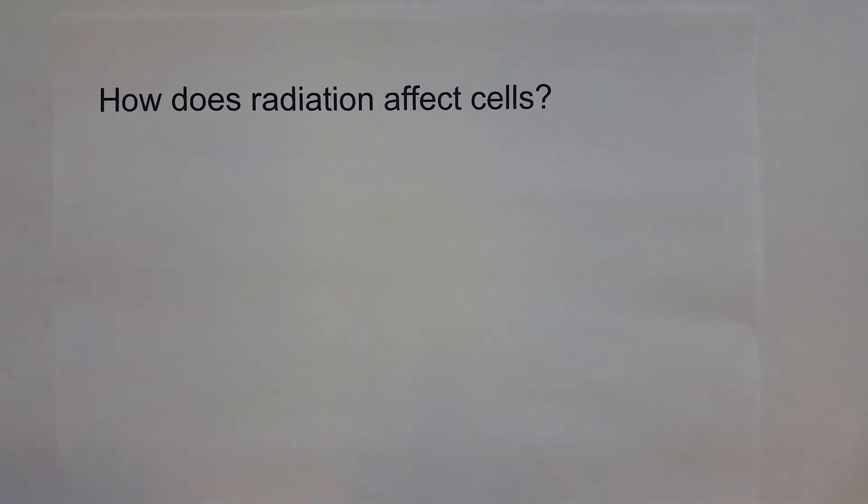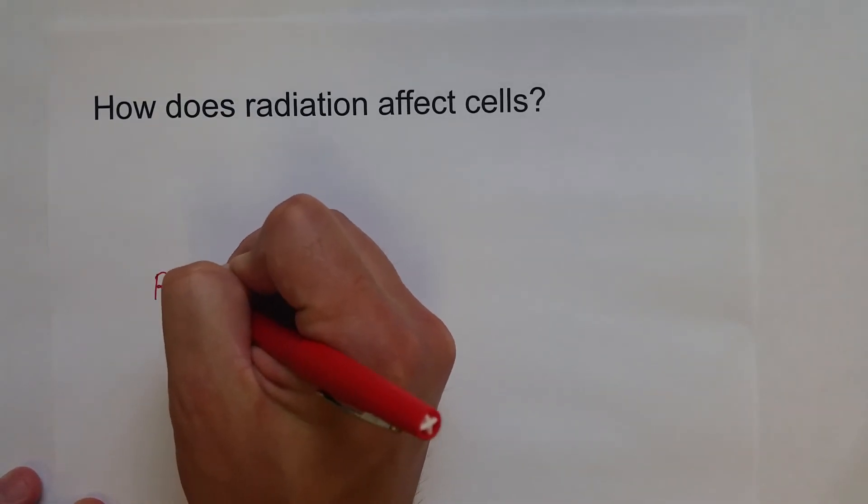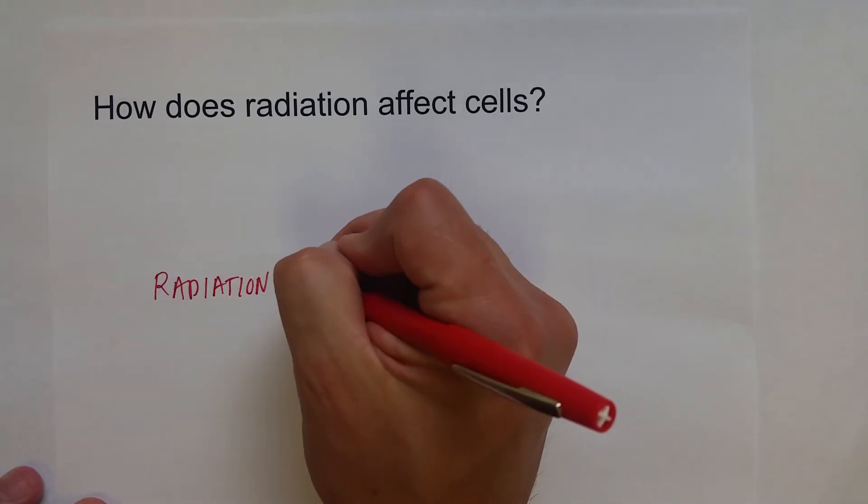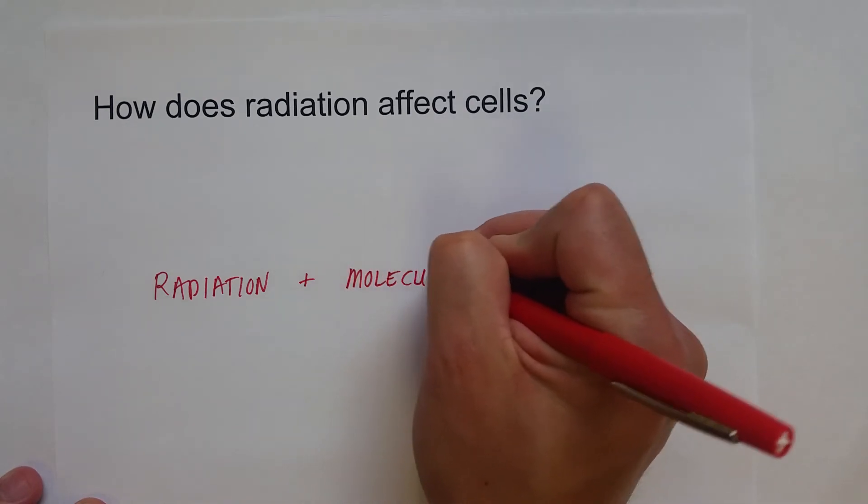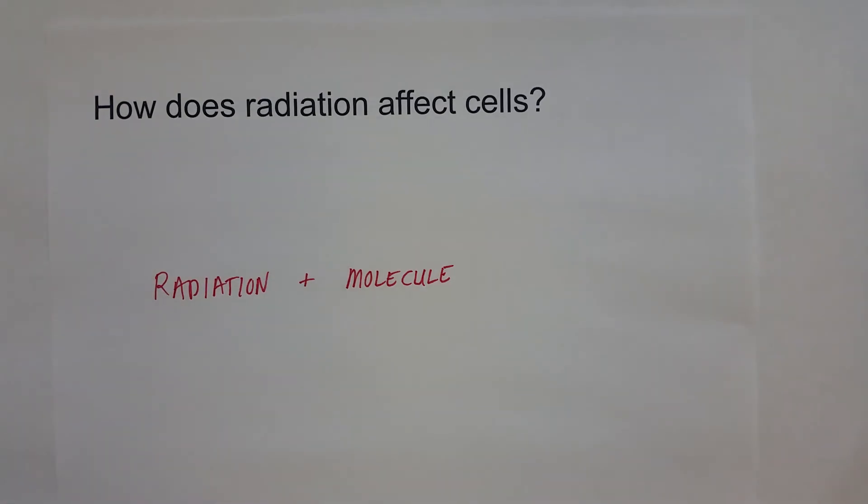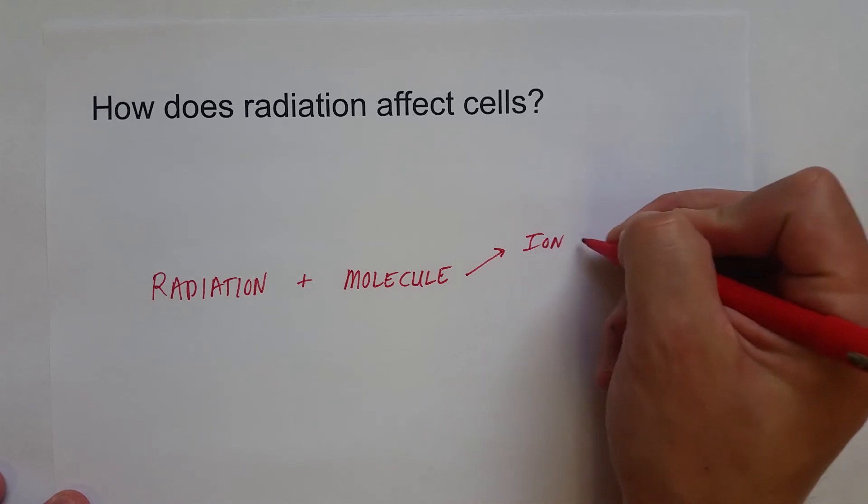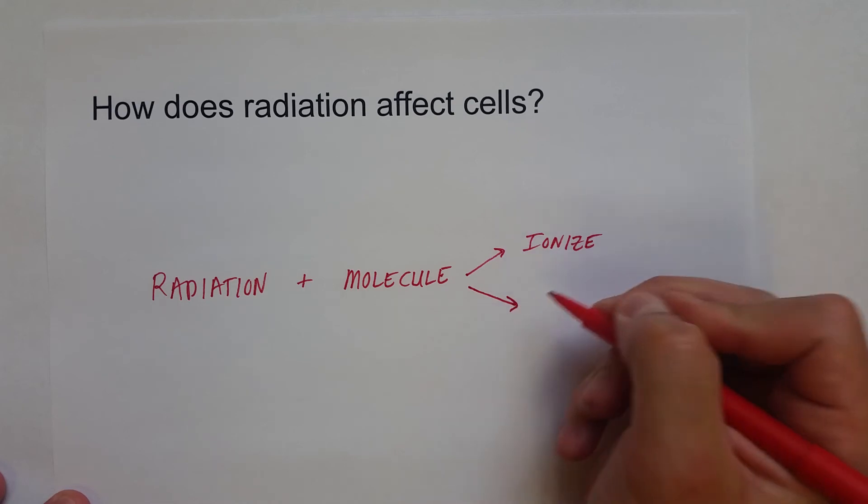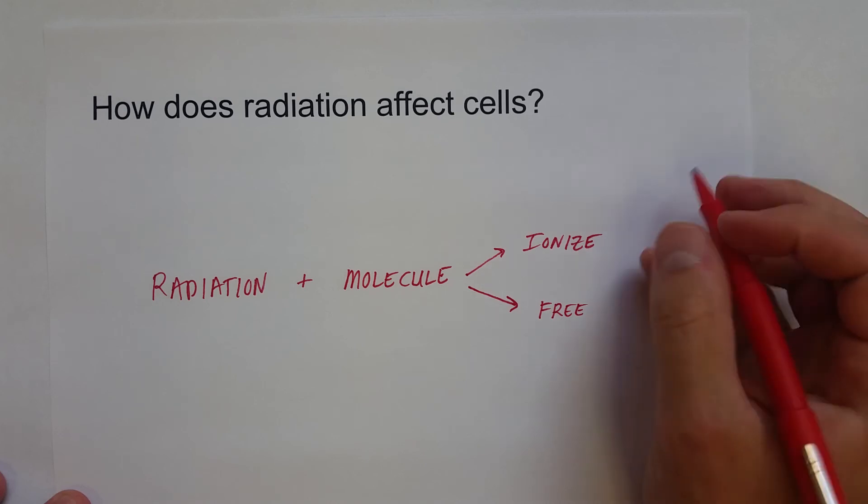Well, essentially, whatever type of radiation that hits your cells, depending on its ionization power, it will do it more or less. But when it strikes a molecule inside of your body, it will often ionize the molecule, create a charged particle. Or, even sometimes, it can create what is known as a free radical, a molecule with an odd electron.